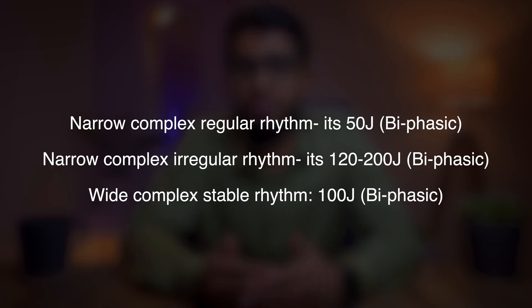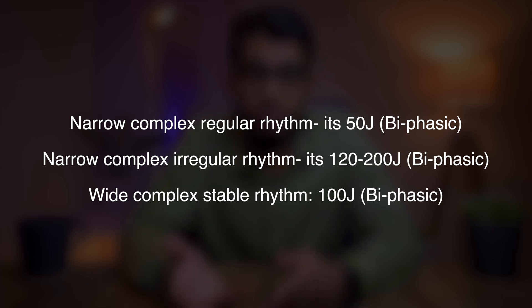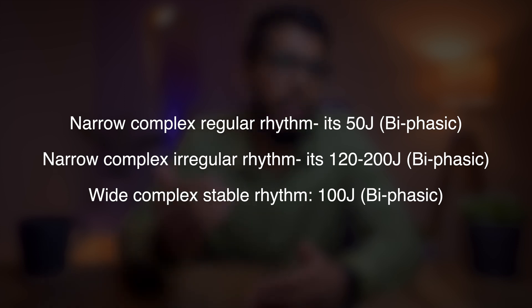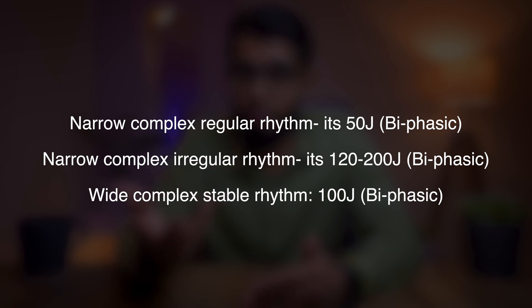The energy used in cardioversion is different for different cases. If it's a narrow-complex regular rhythm, it's 50 joules. If it's a narrow-complex irregular rhythm, it's 120 to 200 joules. And if it's a wide-complex stable rhythm, like in the case of ventricular tachycardia with pulse, it's 100 joules.